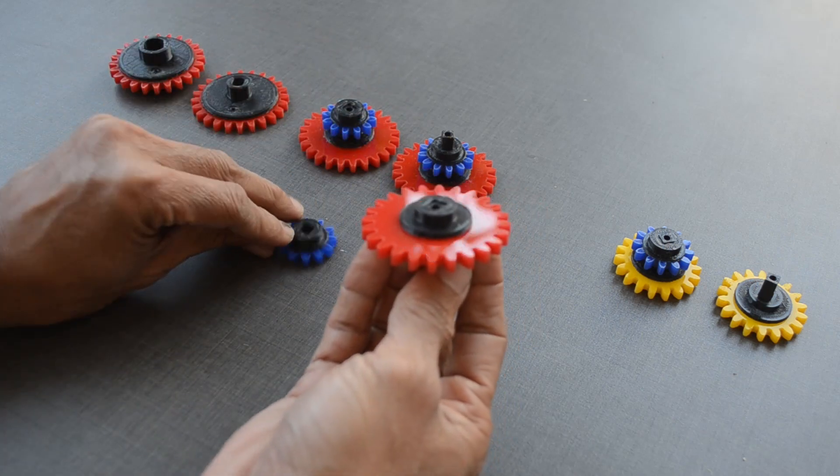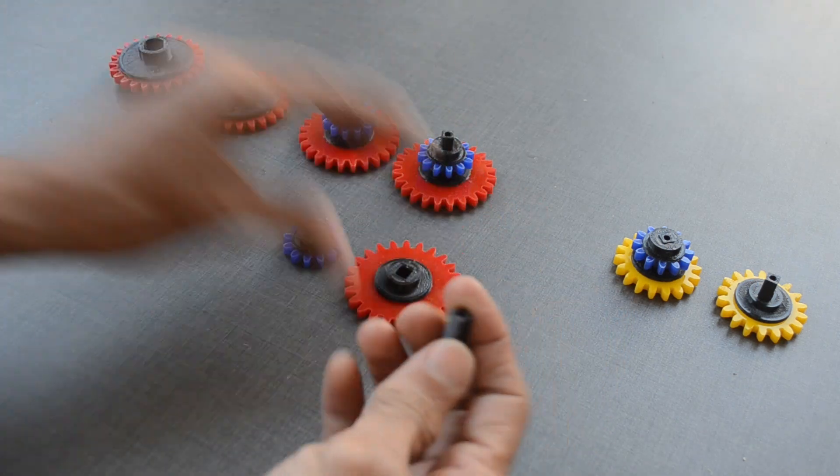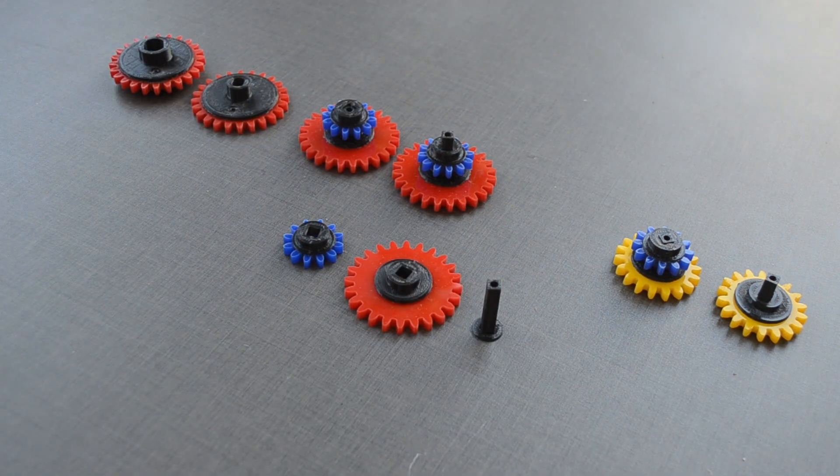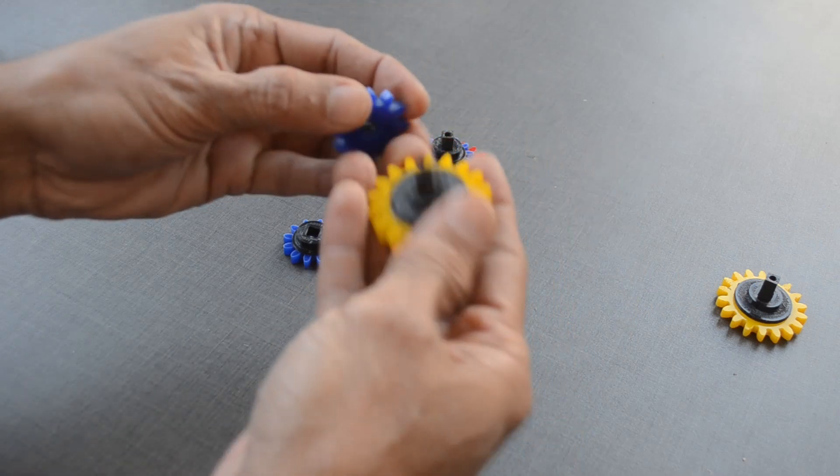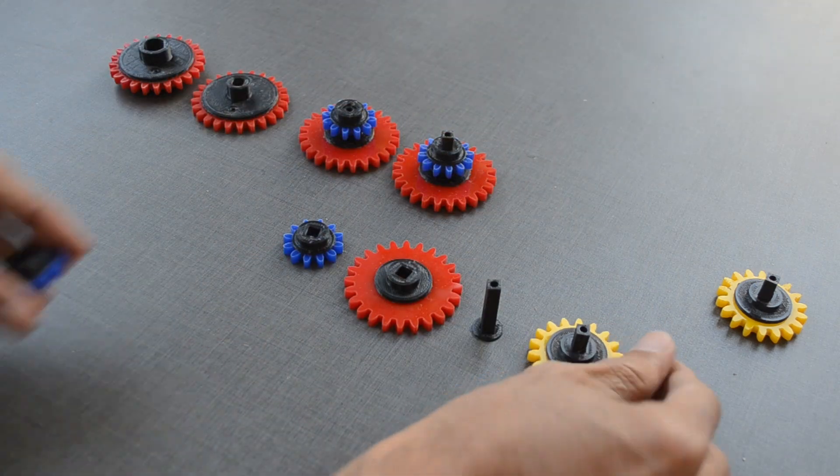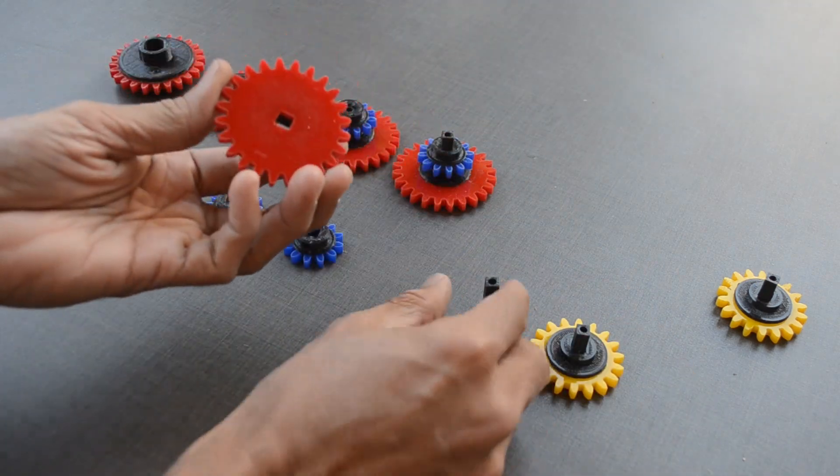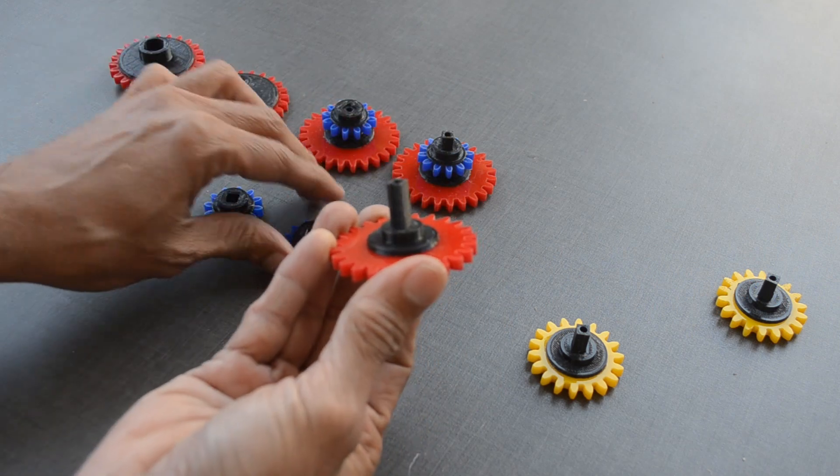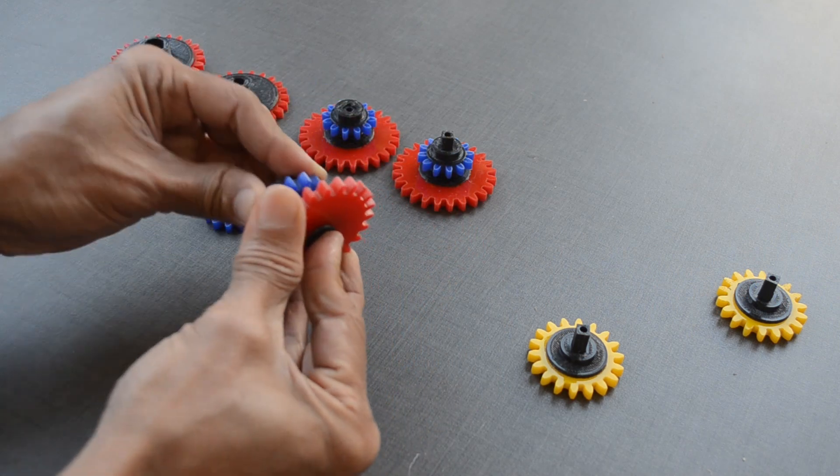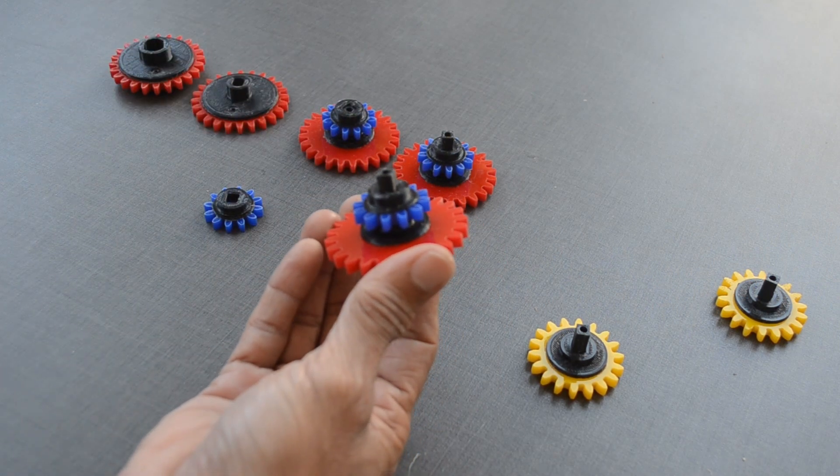Here we have blue colored gear with 12 teeth, yellow colored gear with 18 teeth, and red colored gear with 24 teeth. With these, we can build a compound gear. Our goal will be to achieve one rotation of hour hand for every 12 rotations of the minute hand.